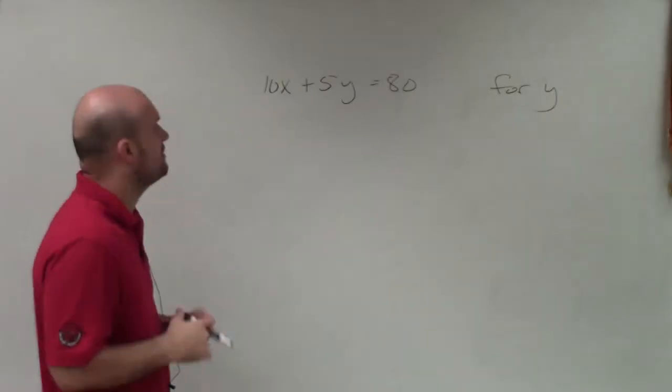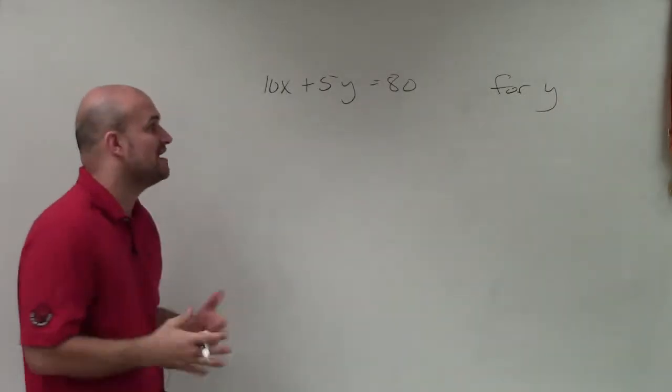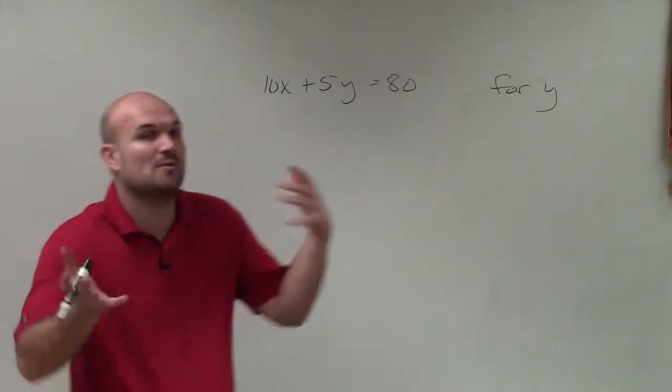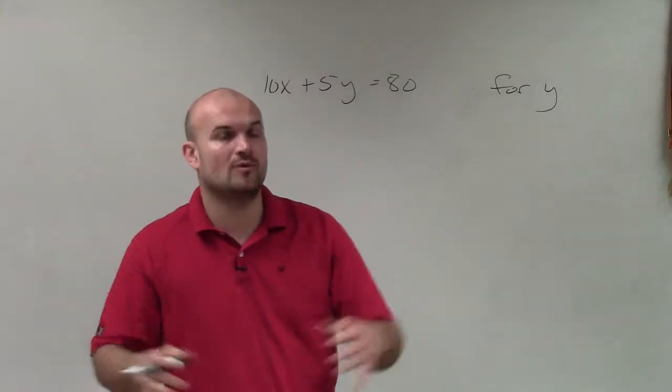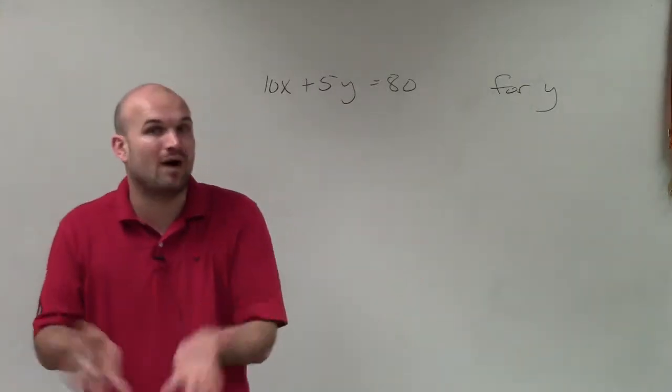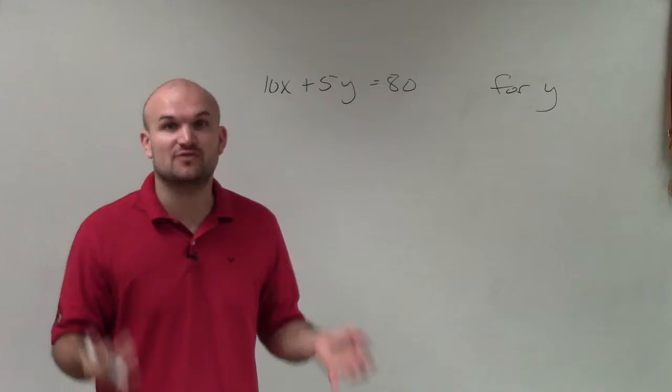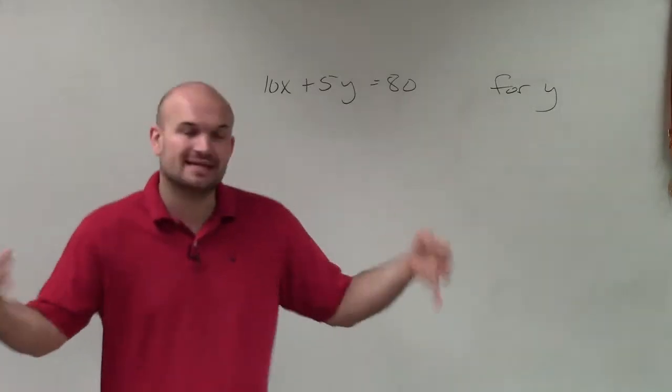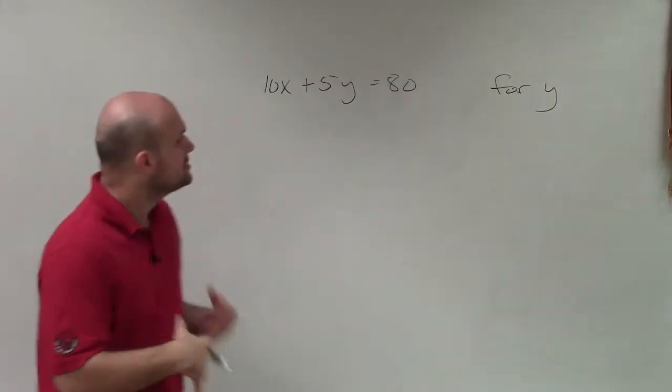Welcome. In this case, what we have is 10x plus 5y equals 80, and what we want to do is solve for y. So we want to get y by itself — we want to isolate the variable.